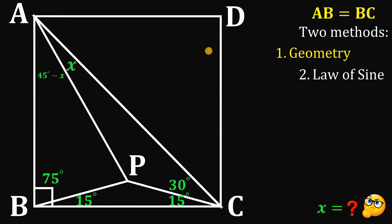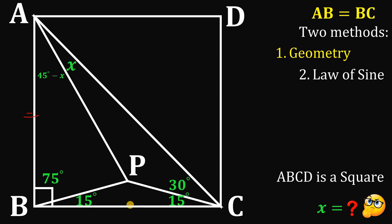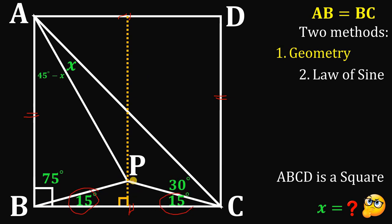Let's call this new vertex D, so ABCD must be a square because all sides are equal. Now we create a perpendicular line that divides side AD. Point P must lie on this perpendicular line because we have two congruent angles. Without loss of generality, let the side length of the square equal 2, so half of it equals 1 on each side.